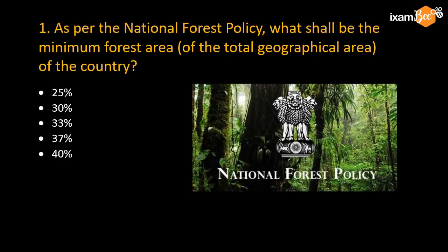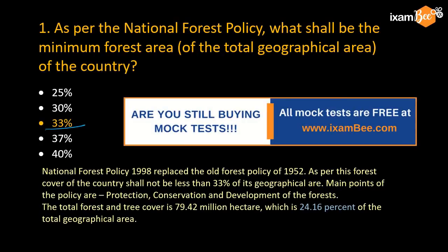The first question is: as per the National Forest Policy, what shall be the minimum forest area of the total geographical area of the country? The right answer is 33%. As per the National Forest Policy 1998 — which replaced the earlier policy of 1952 — the forest area of the country shall not be less than 33% of the geographical area. Right now the forest area is 24.16%, which is much below this 33%. This is important.